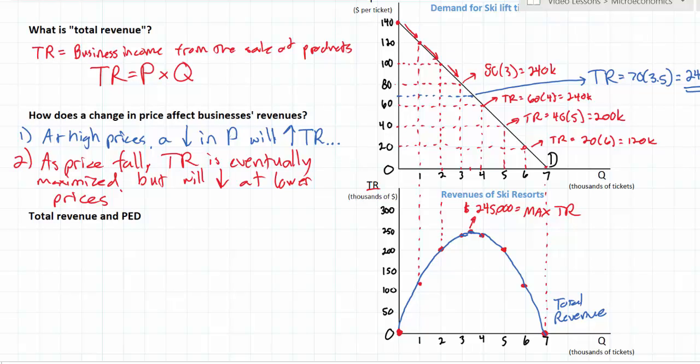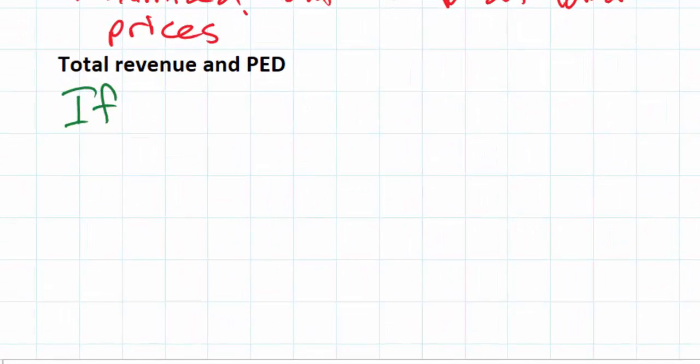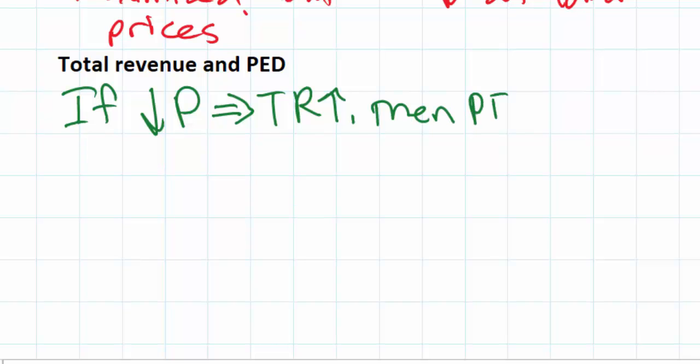Well this is all related to price elasticity of demand. The reason that total revenue is increasing when price decreases at first is because demand is relatively elastic at high prices. So we can say down here that if a decrease in price leads to an increase in total revenue, then demand is elastic. PED is greater than 1.